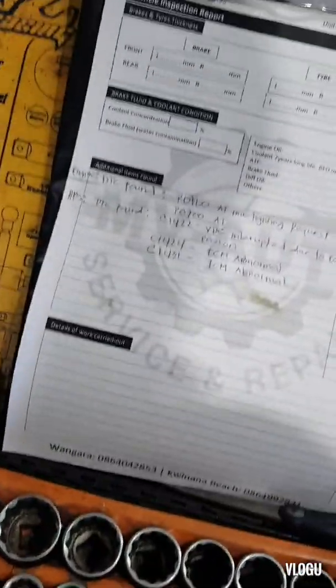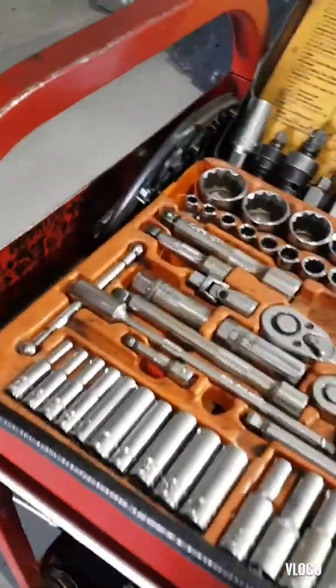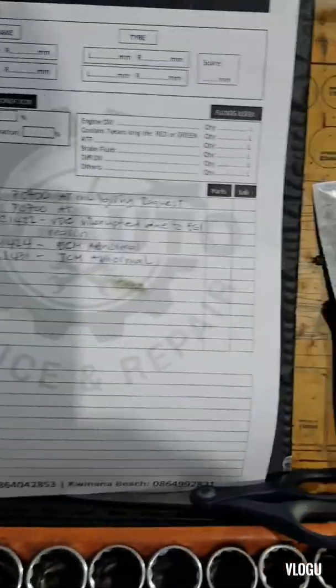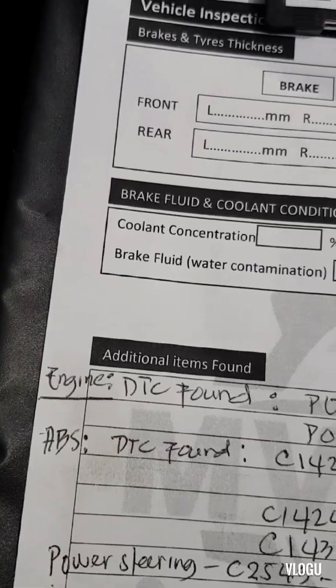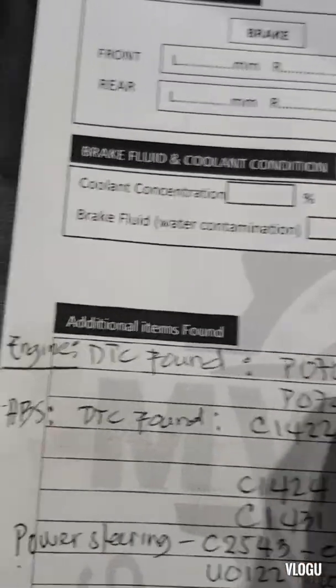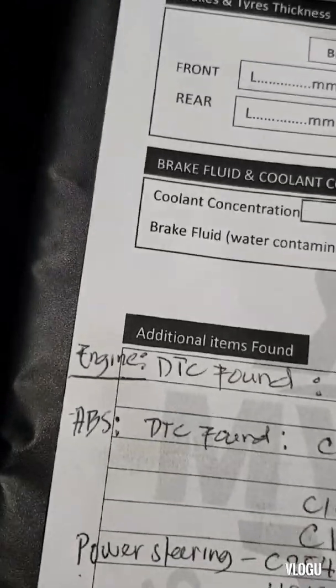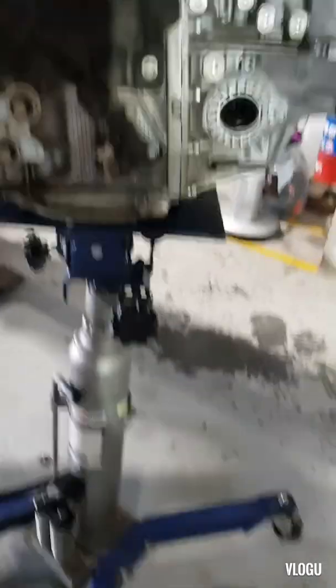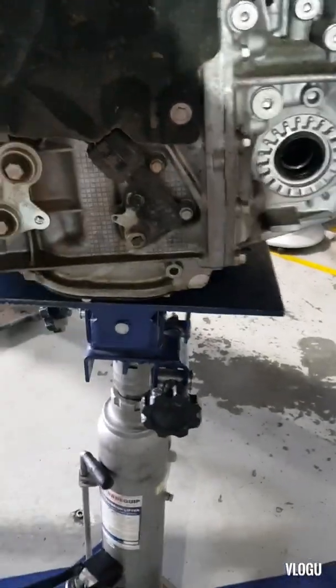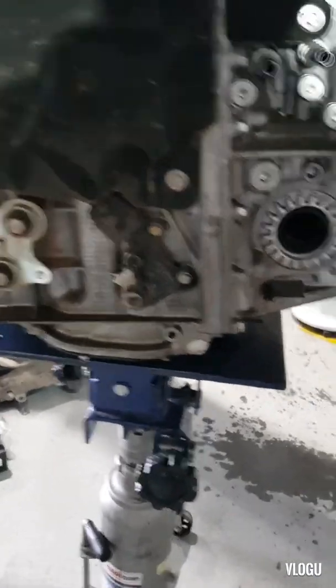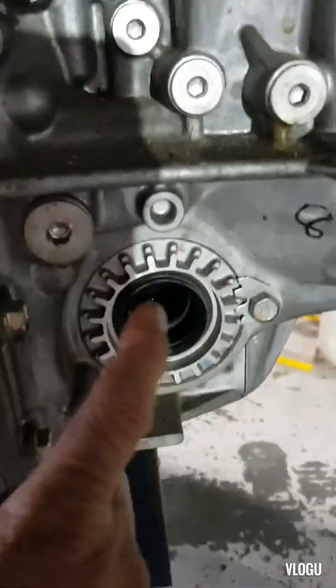The possible causes include a shorted or open circuit in the transmission control wiring harness or poor connector connections. However, the main cause of the problem for this particular vehicle is the transmission valve body itself — specifically the circuit board on the valve body. Apart from those codes, there is also a noise on the front differential, which is inside the gearbox.